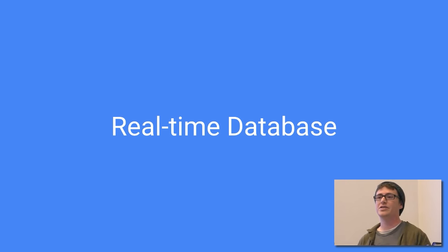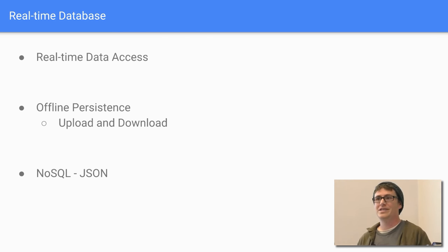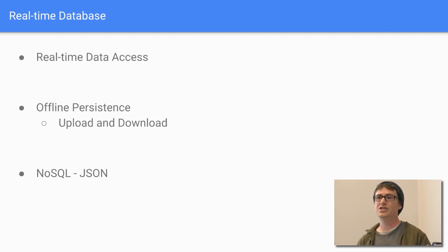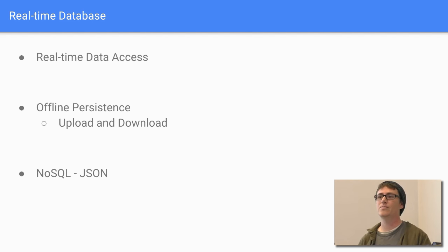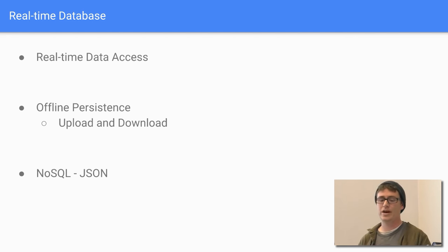The first component is the real-time database, which gives you real-time data access. You can also have offline persistence for uploads and downloads — if you try to upload data without an internet connection, it'll store it and upload when connection is restored. For downloads, it'll use cached data if it can't connect. The database is a NoSQL database, so you're given a JSON tree to work with rather than a relational database where you run queries.